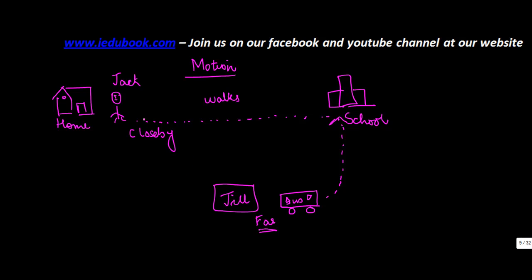Now in both these cases, what you saw was that in the first case, Jack was himself moving from one place to the other. In the second case, Jill went and sat in the bus, and the bus started moving towards the school. This movement basically is resulting in change in position.